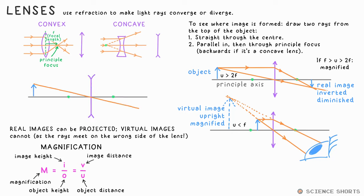Concave lenses always diverge light rays. They always produce a virtual image. With these, our line parallel in goes back through the other principal focus behind the lens. Where it meets the other ray is where the virtual image is.